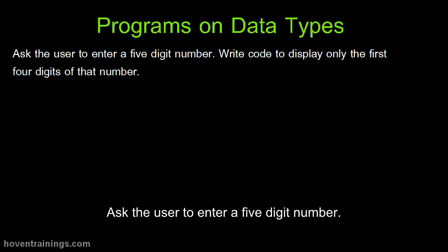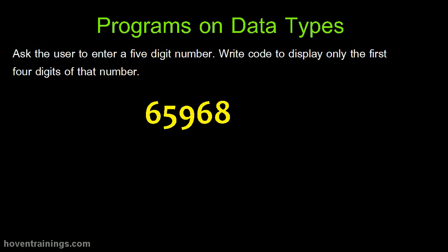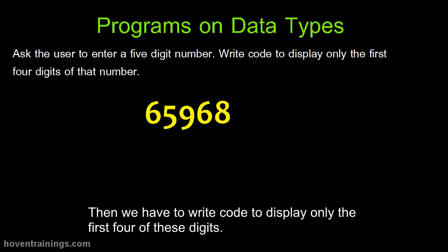Ask the user to enter a five-digit number. Then we have to display only the first four of them. Suppose the user enters this number. Then we have to write code to display only the first four of these digits.